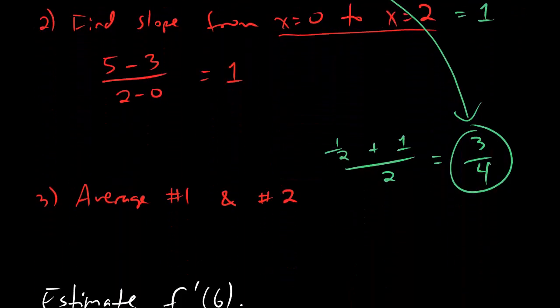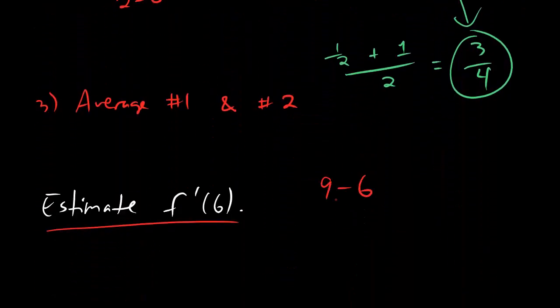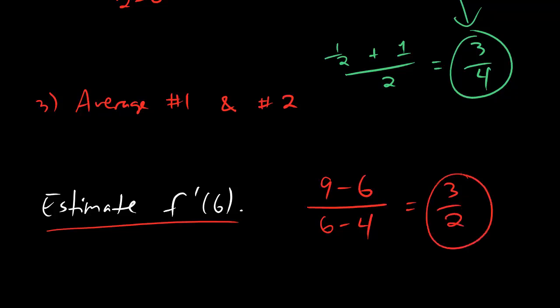So we're going to use the normal slope thing, just going from 4 to 6. And here's what we're going to get. Change in y is 9 minus 6. Change in x is going to be from 6 to 4. And so we get 3 halves. That's going from the original point to the left. We can't go one step to the right, so we just stick with that number that we have.